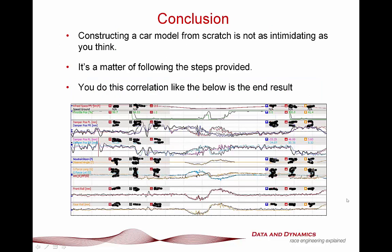Wrapping this up: constructing a car model from scratch is not as intimidating as you think. It's simply a matter of connecting the appropriate dots and following the steps we've discussed. If you do that, the correlation you see here — actual in color, simulated in black, showing speed, throttle, front and rear dampers, steered angle at the tire, lateral G, longitudinal G, and front and rear roll — comes as a consequence. If you're an existing member of the ChassisSim community, give this a crack. If not, sign up to our online simulation and find out for yourself just what a powerful tool this is. We'll catch you in the next ChassisSim tutorial.